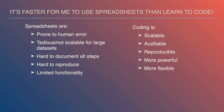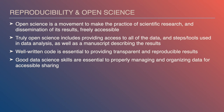Open science is a movement to make the practice of scientific research and dissemination of its results freely accessible. This includes publishing papers in open-access journals, but truly open science also involves providing access to all the data used to produce the results in the paper, all the steps and tools used in data analysis, as well as the manuscript that describes the results.